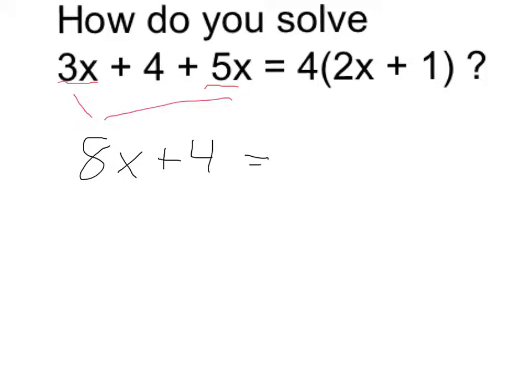On the right side of the equation, we can simplify by using the distributive property. We multiply 4 times 2x, which is 8x, and 4 times 1 is 4.